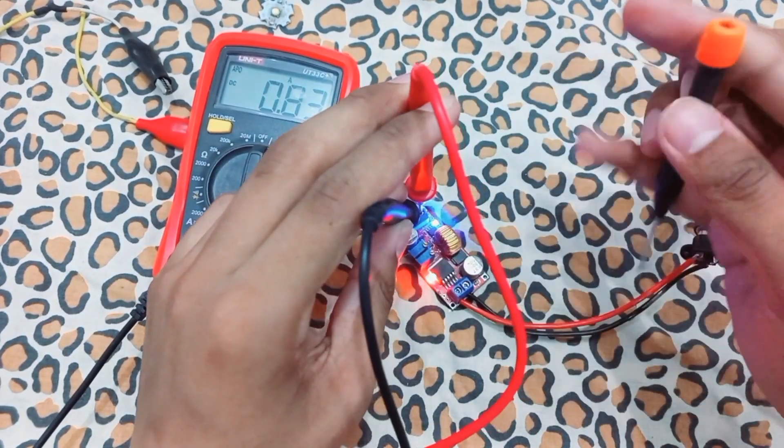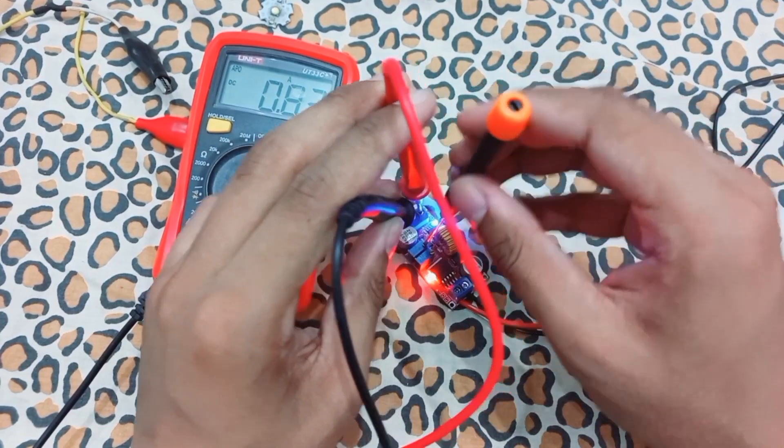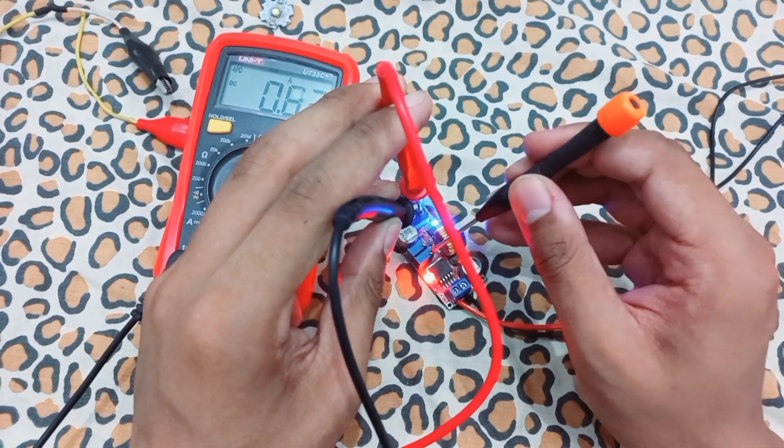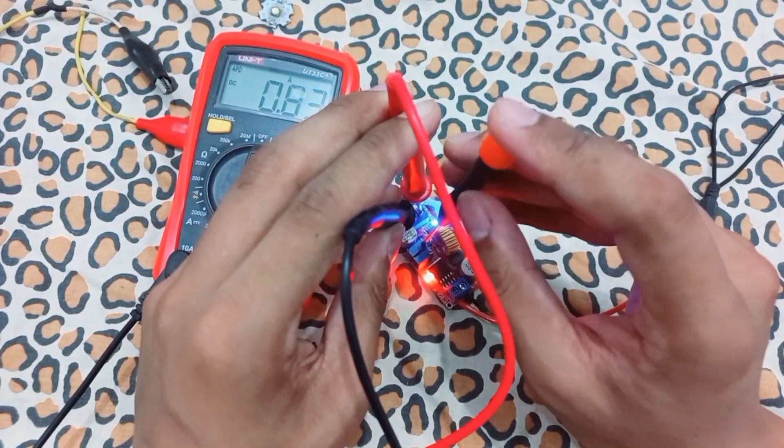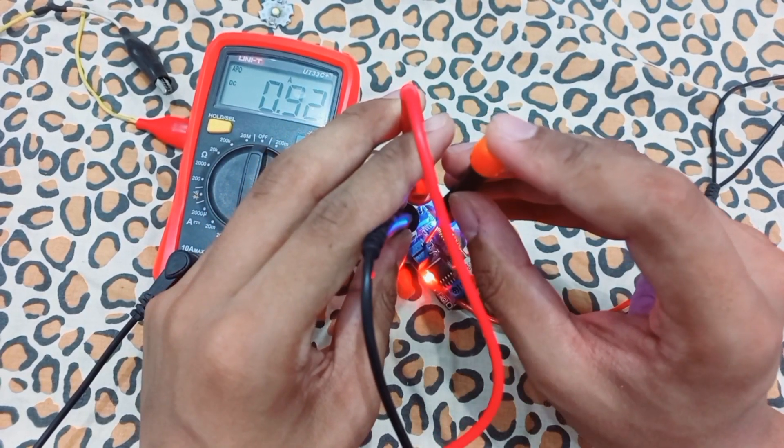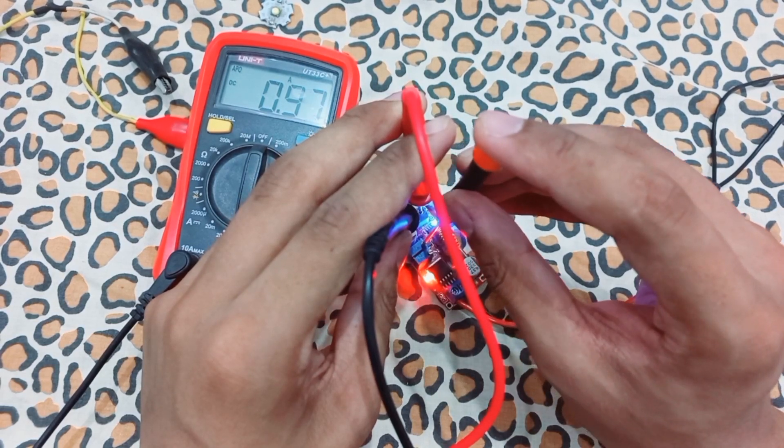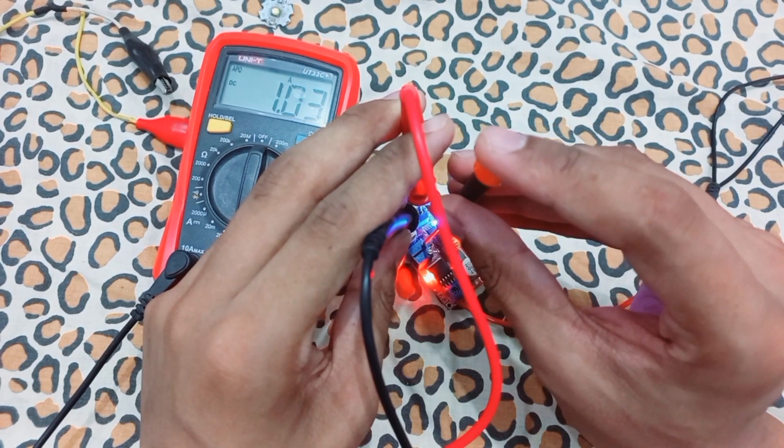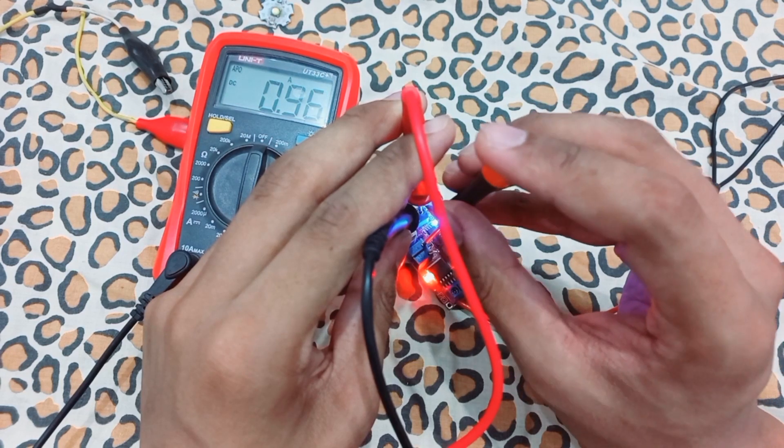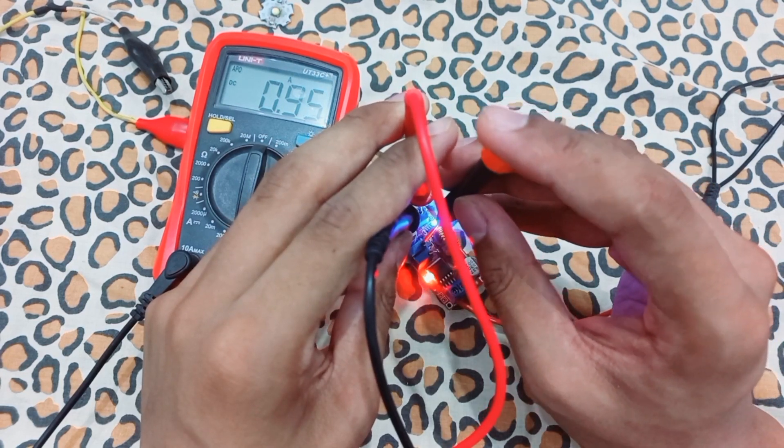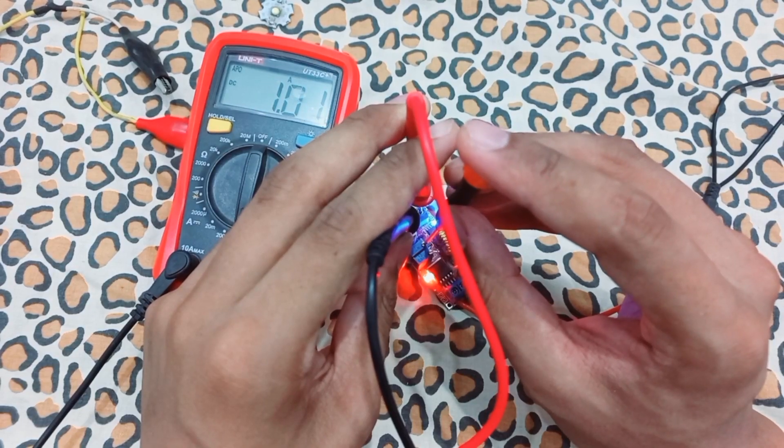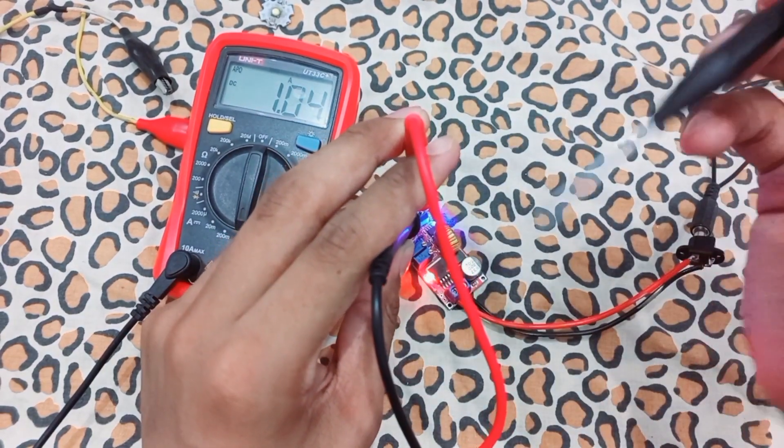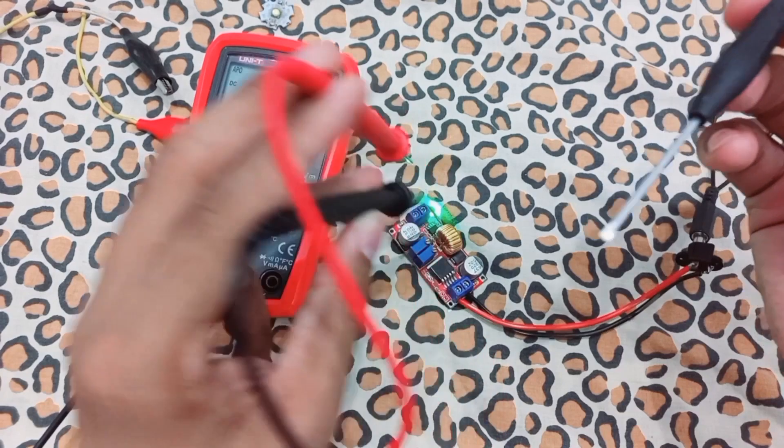By holding the probes, I have to set the current with this. This is for voltage and this is for current. If we rotate it clockwise it will increase the current, and if we rotate it anti-clockwise it will decrease the current. I have set it to 1 ampere as this LED strip needs 11 to 12 volts at 1 ampere.